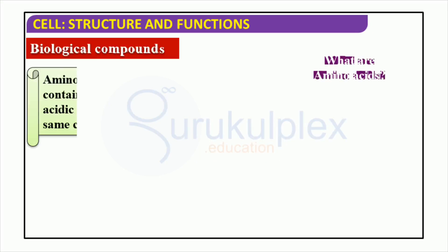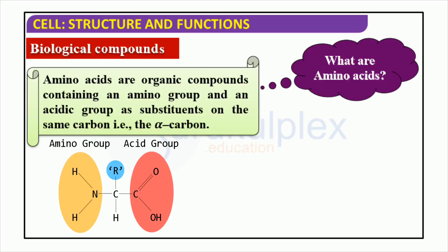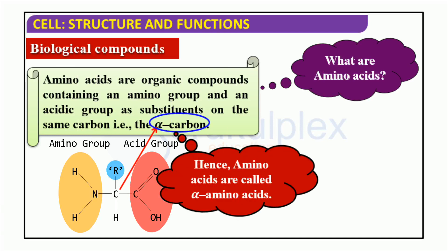Amino acids are molecules essential for life, composed of a carbon atom, an amino group, a carboxyl group, and a hydrogen atom. They are fundamental for the creation of proteins and present in all living organisms. Furthermore, amino acids are the basic elements of many metabolic processes, including energy production and digestion.